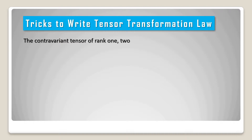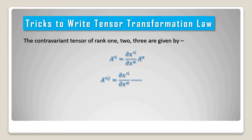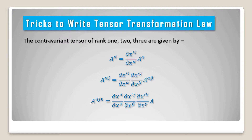Tricks to write tensor transformation law. The contravariant tensor of rank 1, 2, 3 are given by: a prime upper suffix i equal to del x prime i divided by del x alpha into a upper suffix alpha.